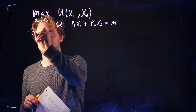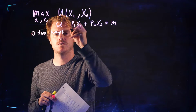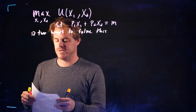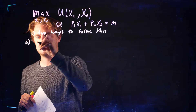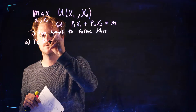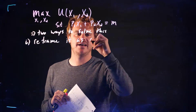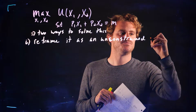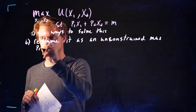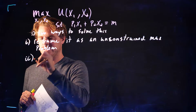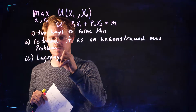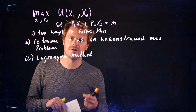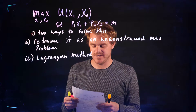There are two ways. The first is going to be to reframe it as an unconstrained maximization problem. And the second method is going to be the Lagrangian. So let's look at each of them independently, and then we're going to apply all of these methods to the Cobb-Douglas utility function.